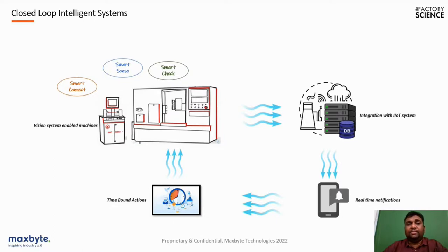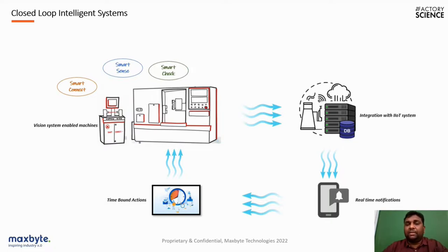The complete system helps form a closed-loop system. With the vision system enabled, data continuously flows to the IoT system, capturing quality data every one or two seconds. Real-time notifications are provided to the maintenance team, plant head, or quality inspection leader for continuous monitoring. For example, if five out of ten components from a particular machine are being rejected, that is a serious concern requiring immediate action. This closed-loop system enables preventive actions and timely corrective actions, which is why we recommend enabling it.